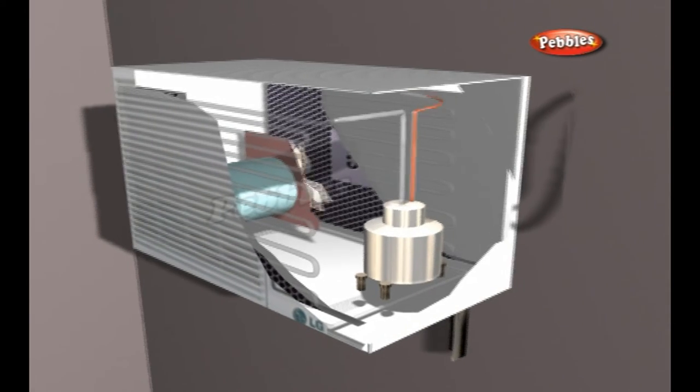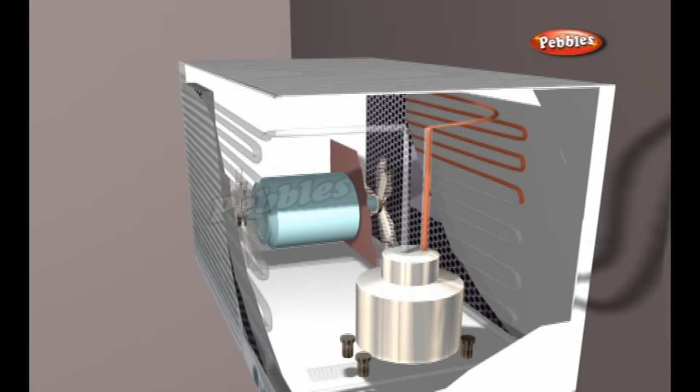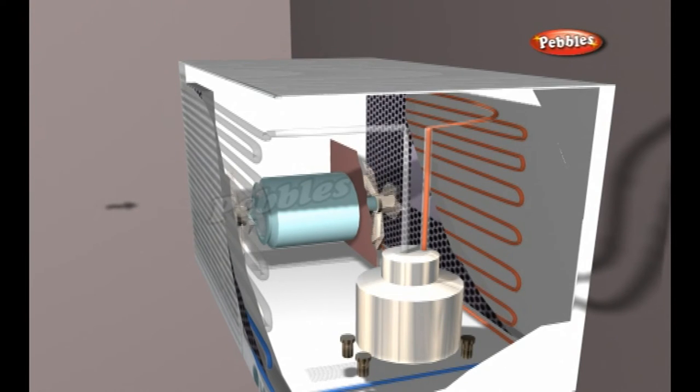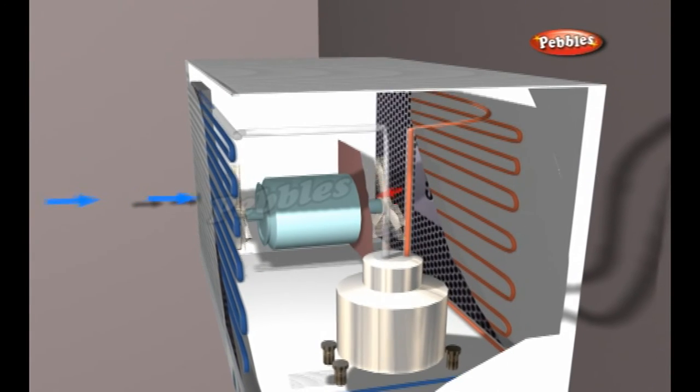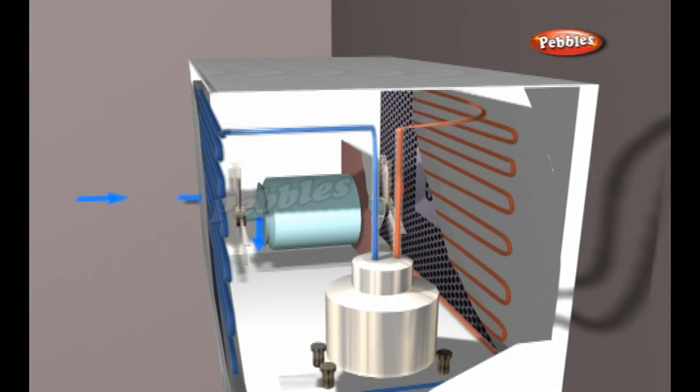The fan blade on the inside part of the unit continually draws room air over the evaporator coils, which are cold. The fan blade on the outside part of the unit continually draws fresh outside air over the condenser coils, which are warm.